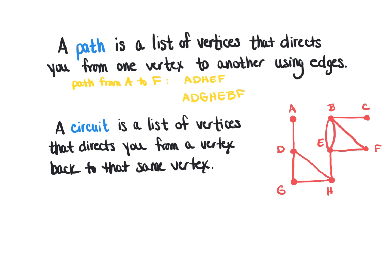A circuit is very similar except it is a list of vertices that directs you from a vertex back to the same vertex where you began. For example, creating a circuit from vertex B: I could go from B to F to E and back to B. That would be one possible circuit.